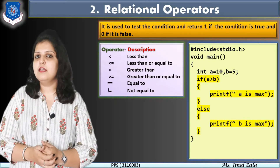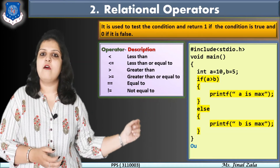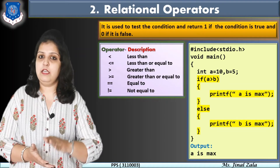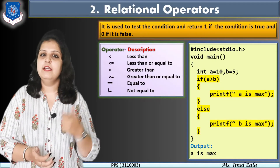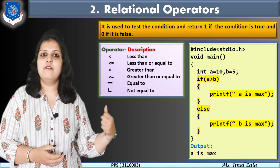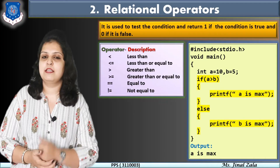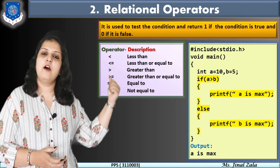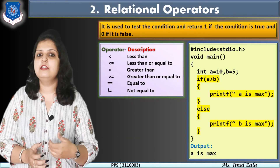How will this program execute? Check the values: a is equal to 10 and b is equal to 5. So 10 greater than 5 — the condition is true. So printf("a is max") will execute, and the else part will be skipped. But if you change the value of b to 50 and check the condition again, then 10 greater than 50 becomes false. In this case, the if part will not execute and the else part will execute — that is, b is max. This is how relational operators work, and you can use any of the operators in a conditional statement.